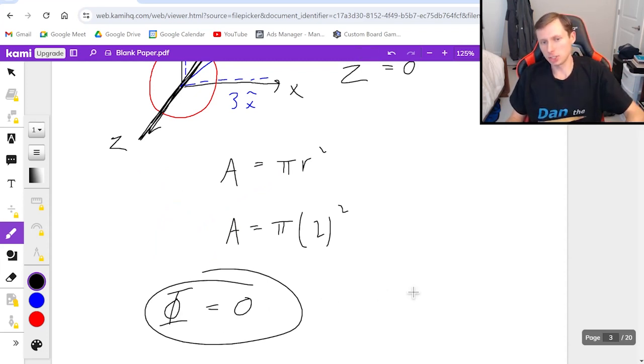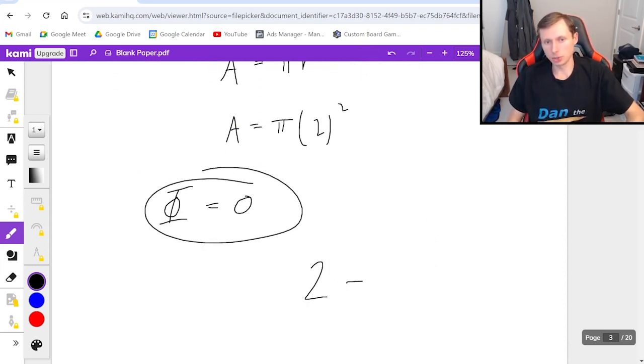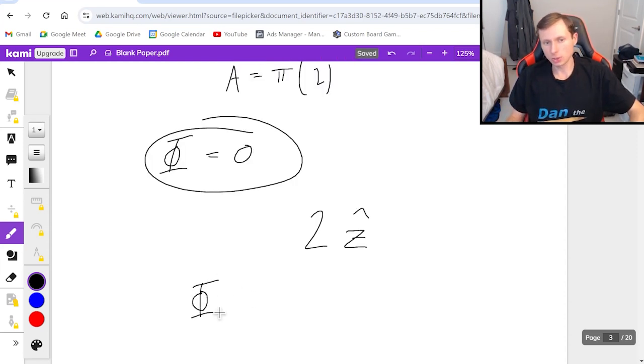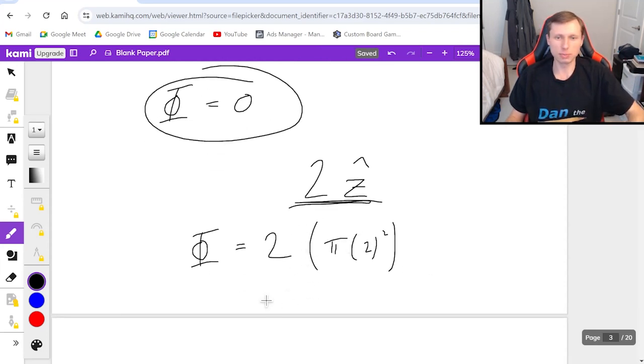So this was kind of a trick question. If there was a z component, just so you know, like let's say it was 2z hat for instance, then you would say the flux was 2 times the area, which was pi times 2 squared. And you don't even need to worry about cosine theta because you've got the right component. You've got the z component. And then the answer would be whatever this is, I think it's 8 pi. So that would be the flux if it was this.